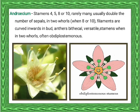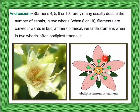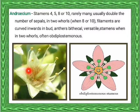Stamens, when in two whorls, are often diplostemonous. What is diplostemonous condition? In this condition, two sets or two series of stamens are present. In these two series, the outer series is inserted opposite to the petals and the inner series is inserted opposite to the sepals. Androecium consists of 4, 5, or 8 stamens.